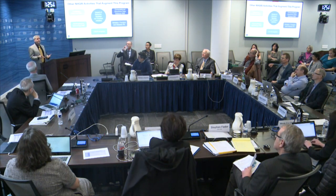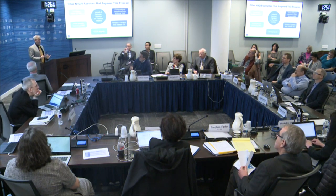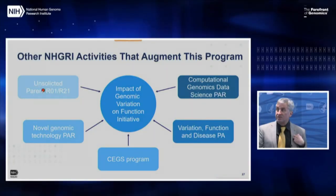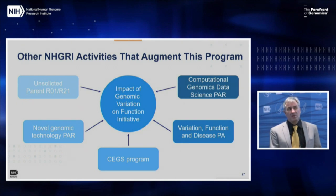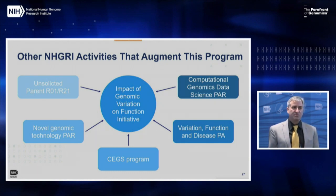There are some choices we made where we didn't include topics in this concept because they're happening well already in other places in NHGRI. For technology development, our unsolicited program and novel genomic technology program covers the development of new experimental methods very well. Similarly, for development of new computational methods—which is very important and not yet solved—a lot of that is happening already through our unsolicited portfolio and our computational genomics data science program.